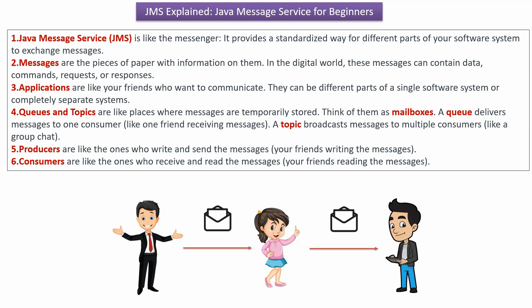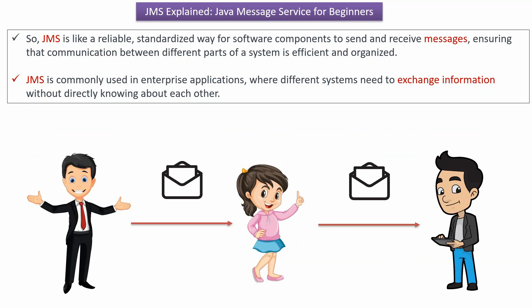Producers are like the ones who write and send messages, equivalent to your friends writing the messages. Consumers are like the ones who receive and read the messages, equivalent to your friends reading them. JMS is a reliable and standardized way for software components to send and receive messages, ensuring communication between different parts of the system is efficient and organized.